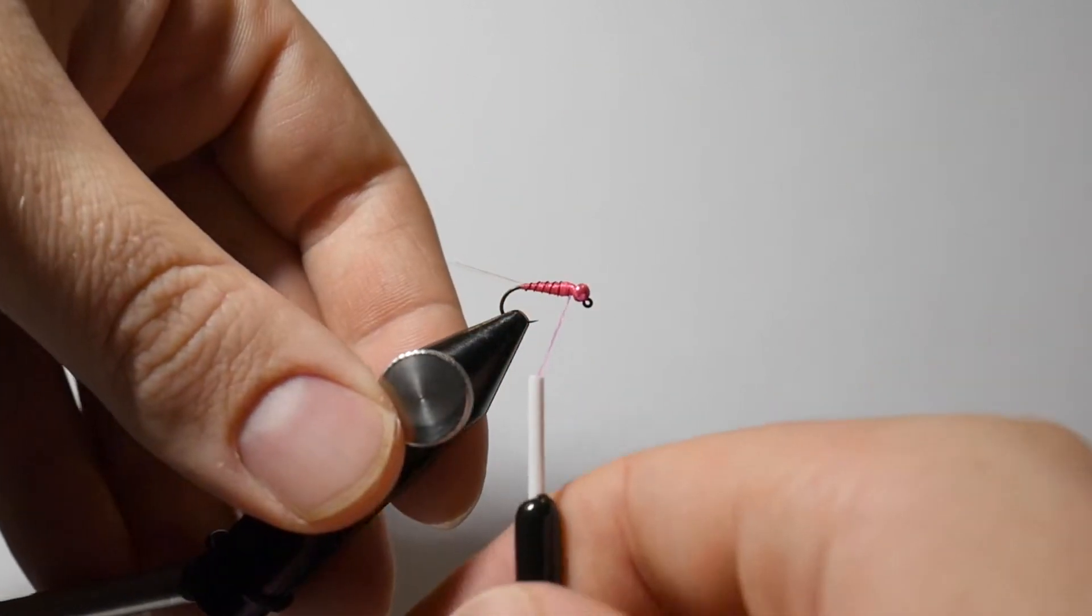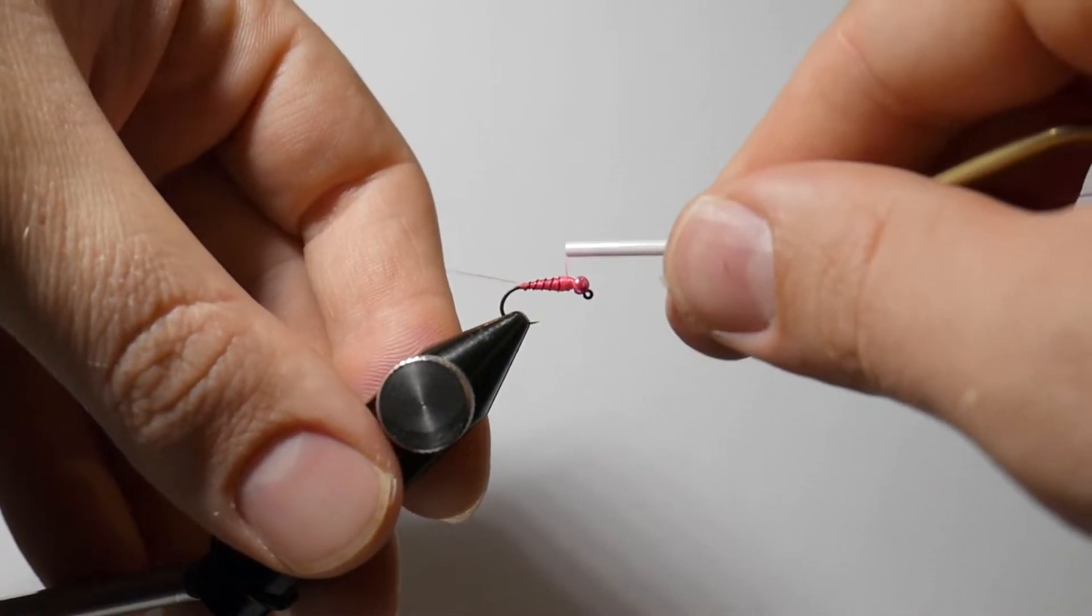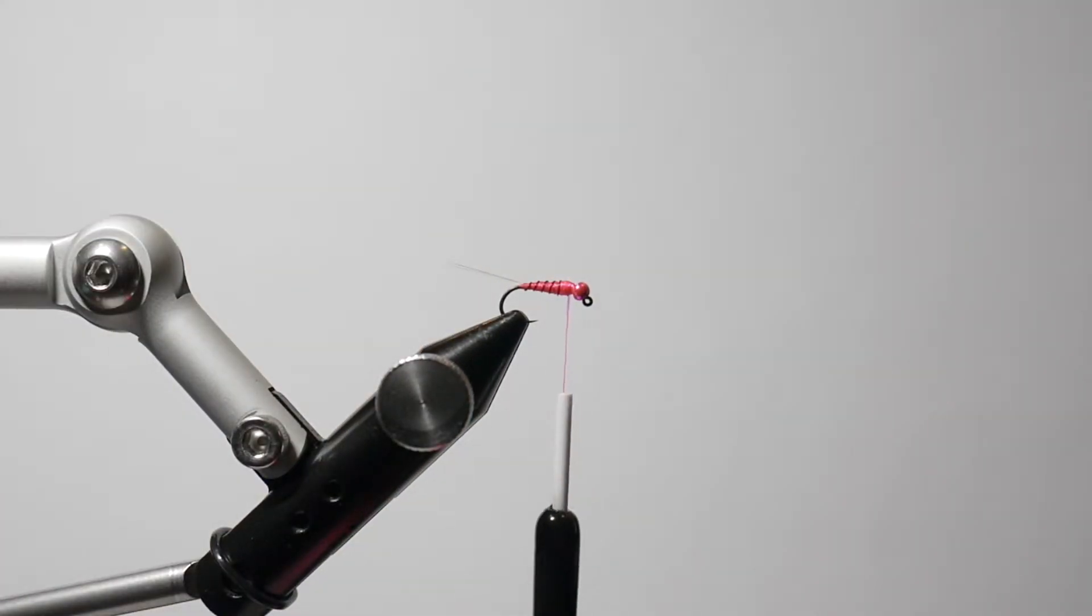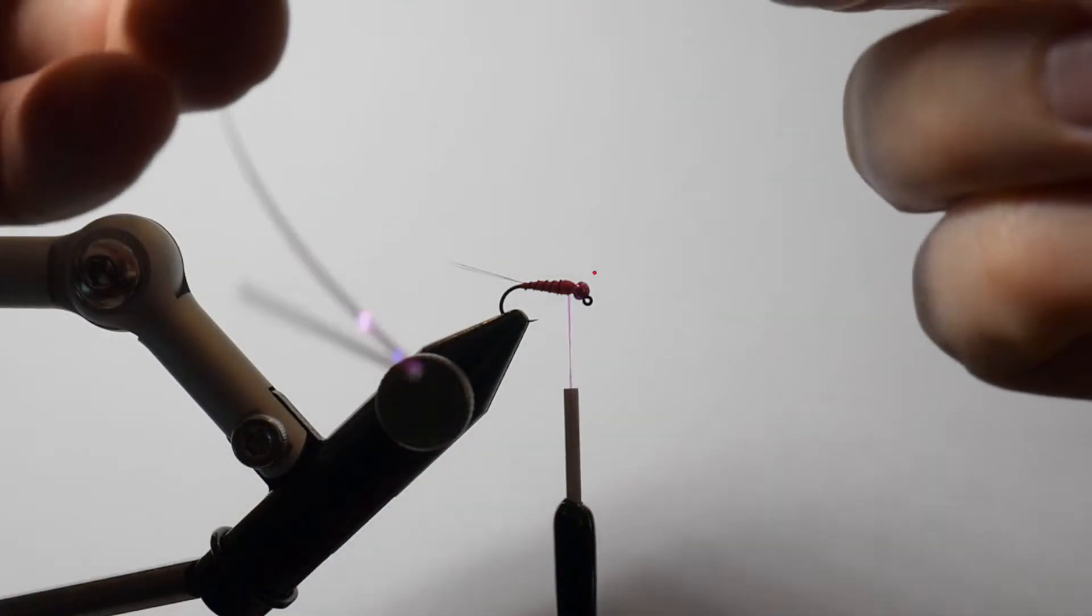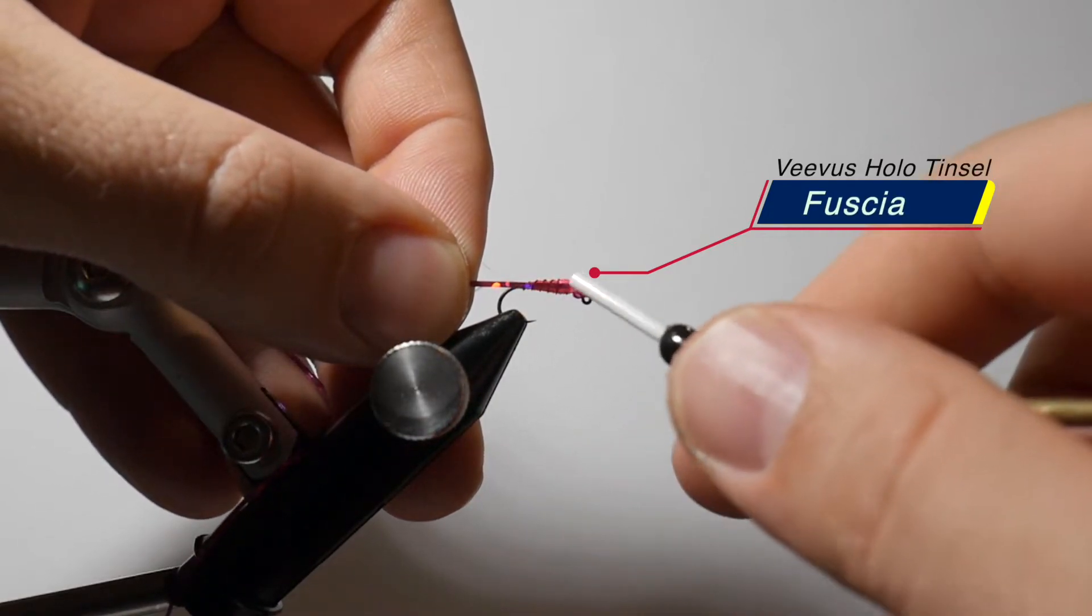Now what I want to do is a couple more wraps just to really secure that wire in there. And then what we are going to do is tie in our last material. This last material is a Veevus as well, it is a hollow tinsel, this is their medium, and the label on this one is H08, but it's like a fuchsia color, so not quite pink, not quite purple, just sort of right there in between. And I love this color for this fly. I think it gives it just the right kind of hot spot on the fly but it doesn't damper the color of the pink.